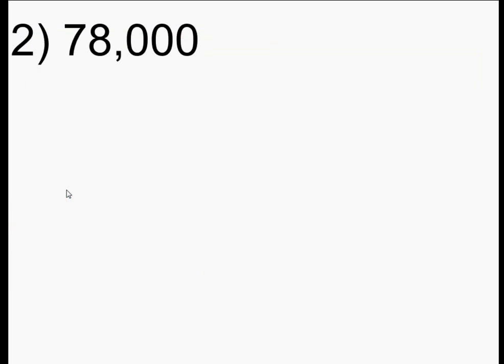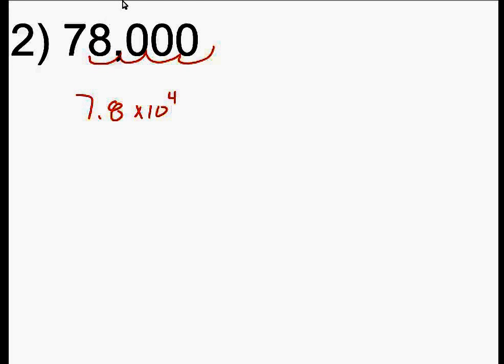Why don't you press the pause button and try to express 78,000 in scientific notation? 78,000 expressed in scientific notation: I move the decimal 1, 2, 3, 4 — four places. So it's going to be 7.8 times 10 to the fourth. There is no decimal point at the very end, so I don't need to include those trailing zeros in my answer.